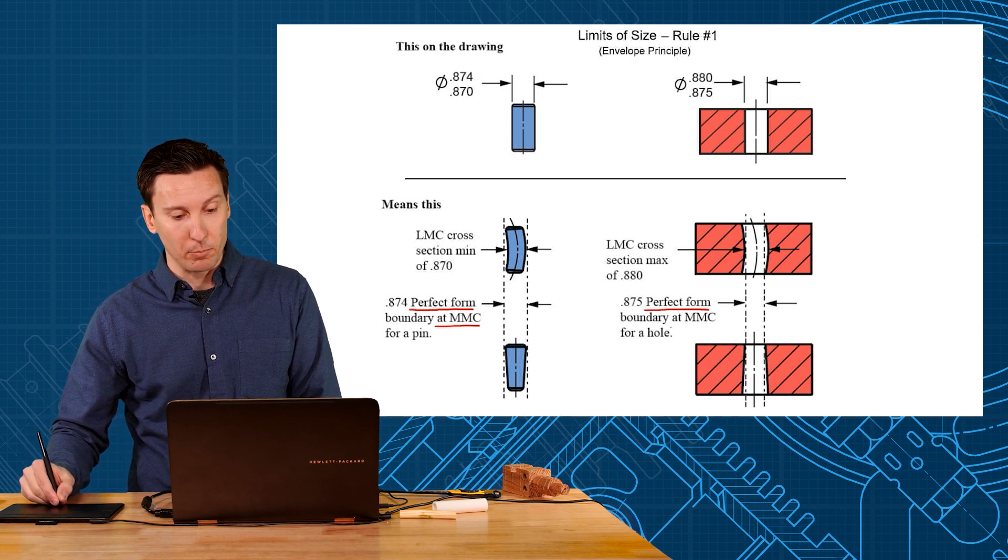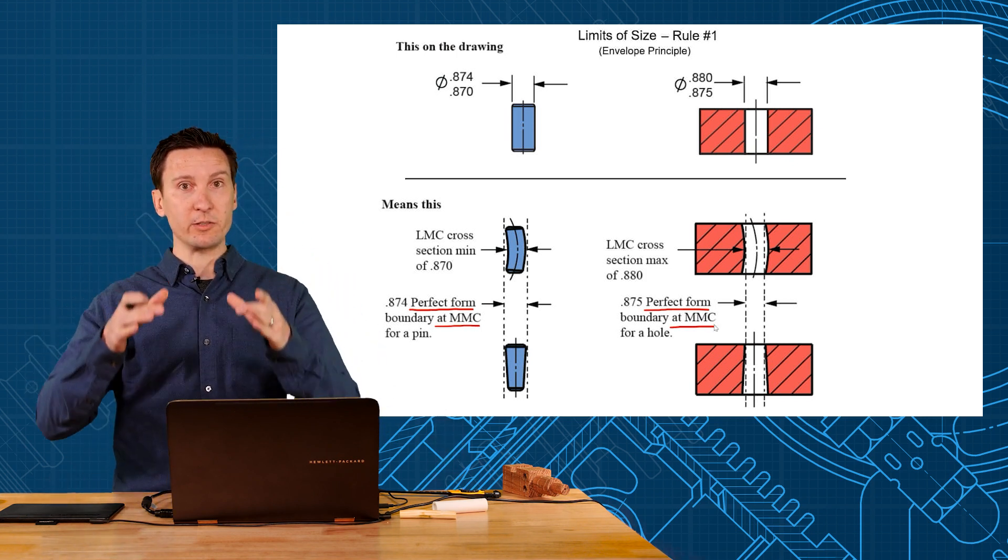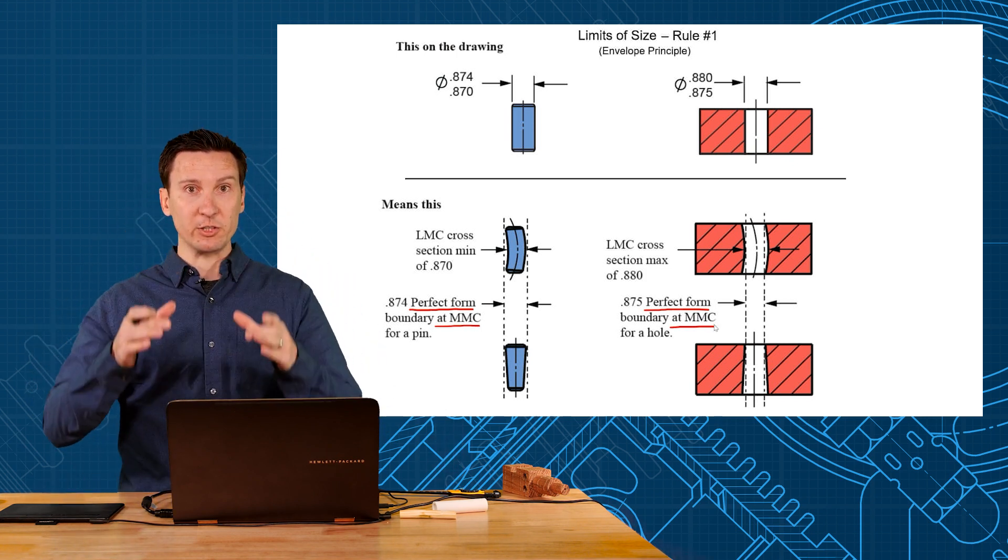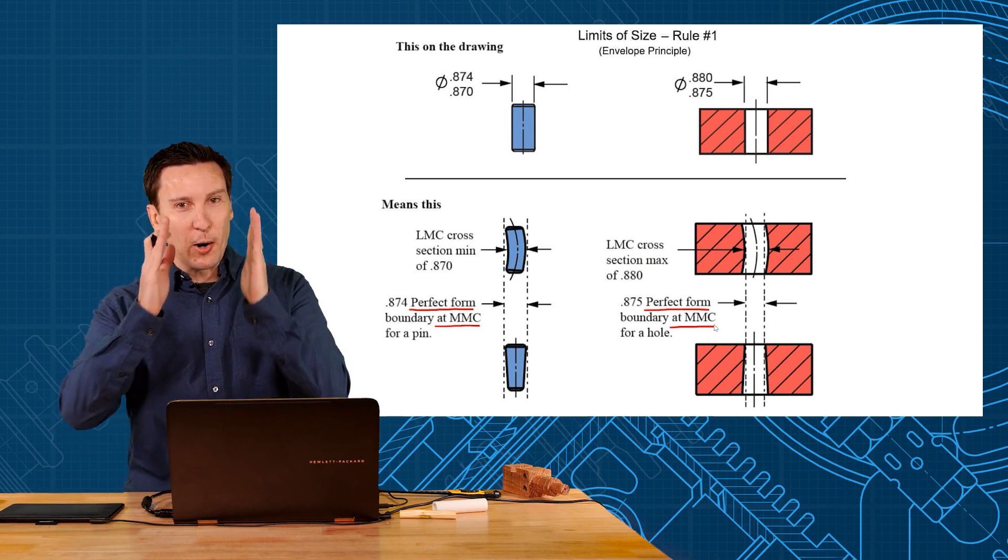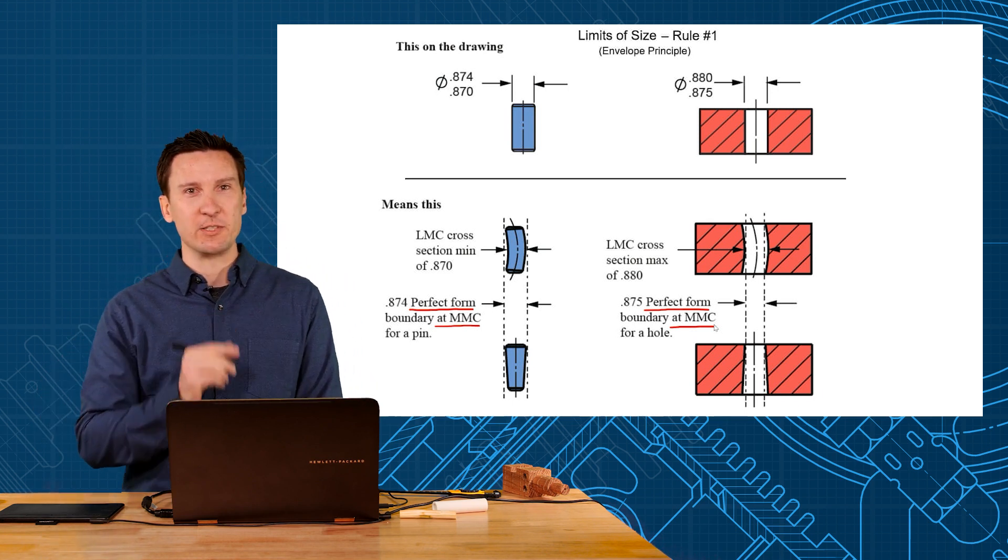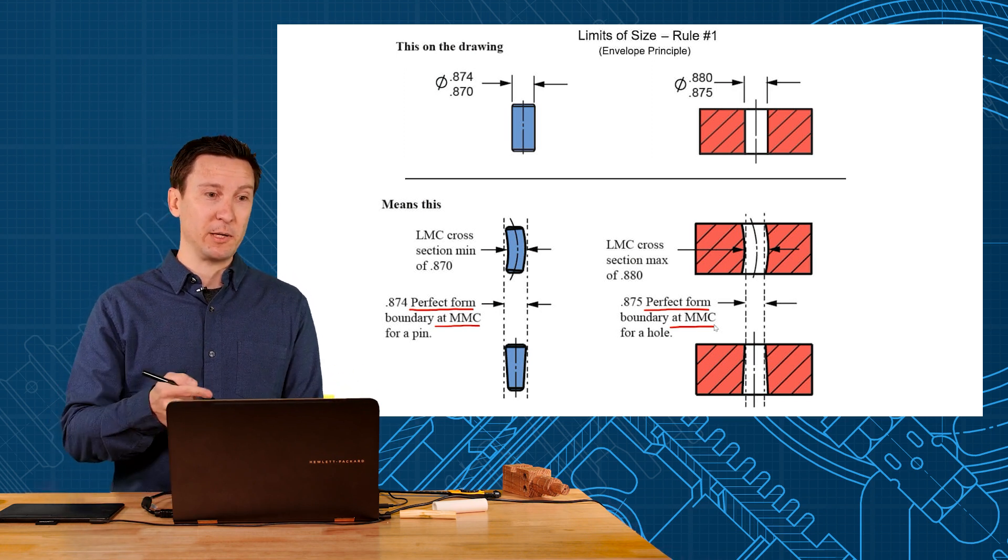Same thing goes for a hole. A hole is a feature of size and therefore bound by perfect form at MMC, Rule Number One. So when this hole is at its smallest, it must be perfectly straight. Now as its cross-section gets larger, then it can bow and bend by that amount, but still engage the mating pin.